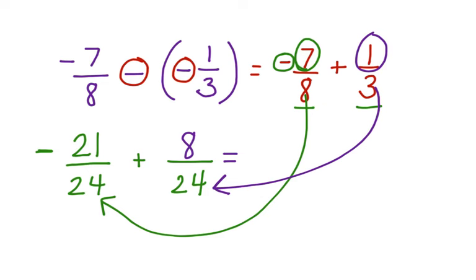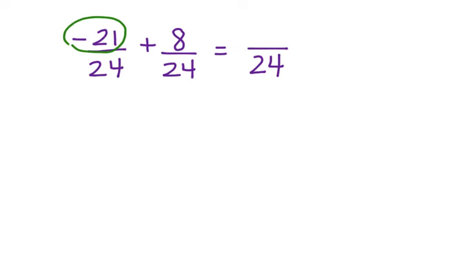Let's move this to the next screen. Here I have negative 21 twenty-fourths plus 8 twenty-fourths. I can bring 24 over into my solution. Now, notice in my numerator I have a negative 21 plus a positive 8. So I need to find the difference between 21 and 8. The difference between 21 and 8 is 13. And because I had a greater loss than gain, my answer is going to be negative. The solution to this problem is negative 13 twenty-fourths.